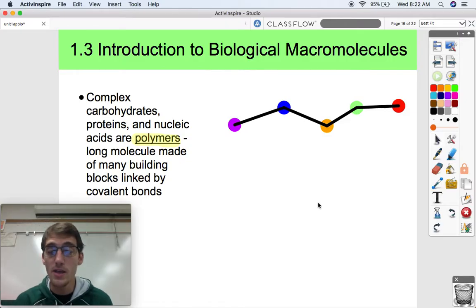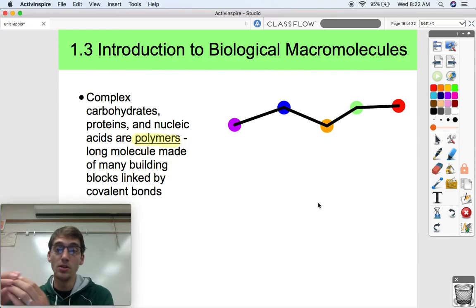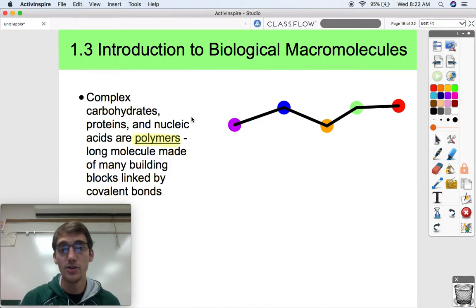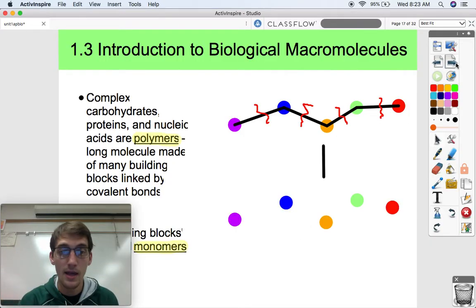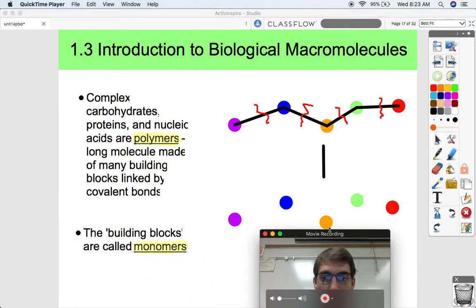You can have lots of different what are called monosaccharides and build them up into a polysaccharide. So mono means one, poly means many. So proteins and carbohydrates and nucleic acids, nucleic acids is a really long chain of little monomers called nucleotides.